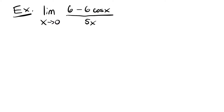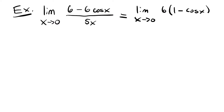Next, we're going to be looking at the limit as x approaches 0 of 6 minus 6 times cosine x all over 5x. So now we're going to be working with cosine instead of sine. We want to look for that 1 minus cosine x over x in any way that we can. I see our 1 minus cosine x term, but it's looking a little different because of these sixes. So we can start by pulling that out — I'm going to write the limit as x approaches 0 of 6 times 1 minus cosine x. Pull out that 6 so that we can see what we're working with.